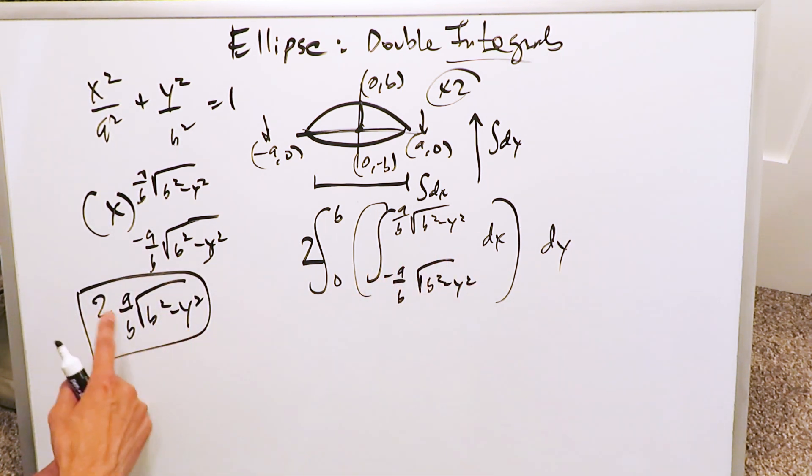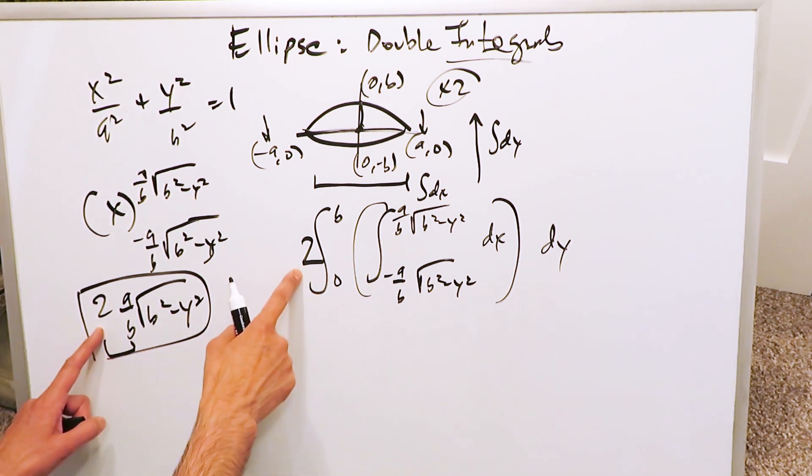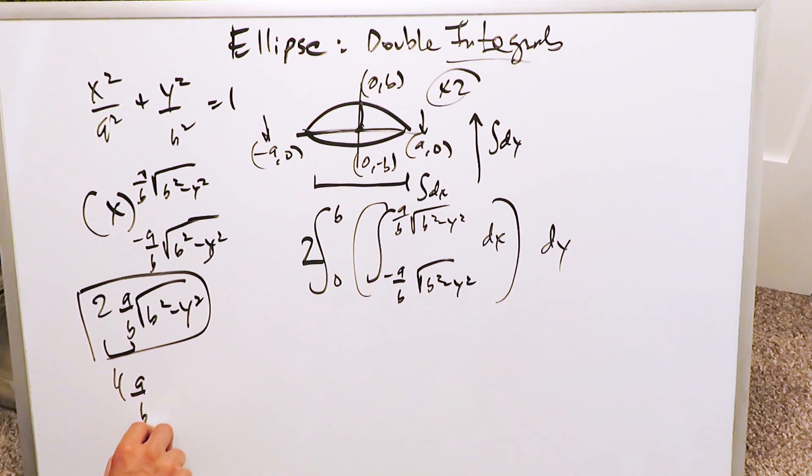There's variables in here. There's constants. This part right here can go out with the 2. 2 times this 2 is a 4, and then you have an a over b. You'll have a 0 to b integral, and this here is your variable, b squared minus y squared with respect to dy, for which now you must do trigonometric substitution.